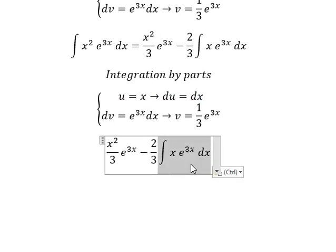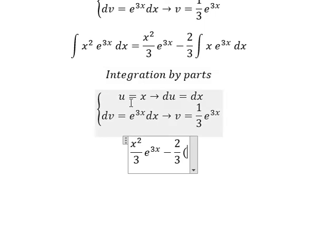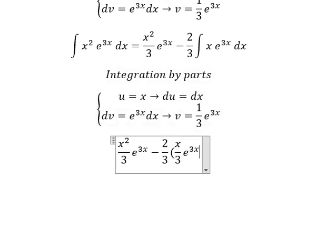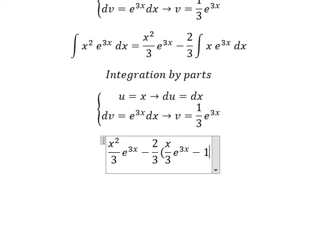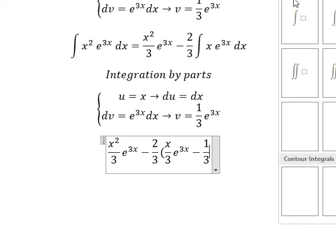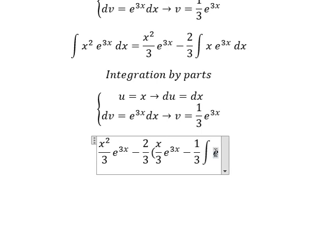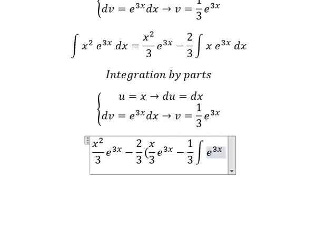About this one, we have u multiplied by v. So that should be x over 3 e to the power of 3x. Later that we have du multiplied by v. So we have negative 1 over 3 and we have the integration e to the power of 3x dx.